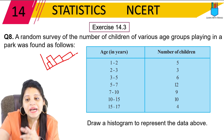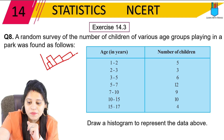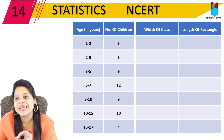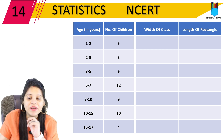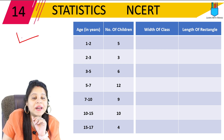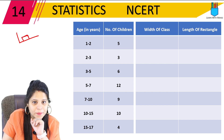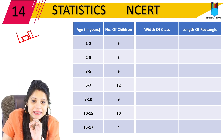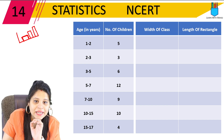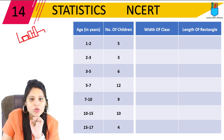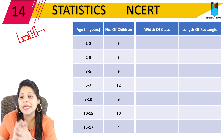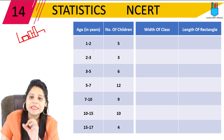Now let's talk about how we plot this. We take two things: one is the width of the class, and the second is the length of the rectangle. The width means the width of our bar will be the class width. The length of the bar depends on how large or small it is. So we will find the width and length of the histogram.